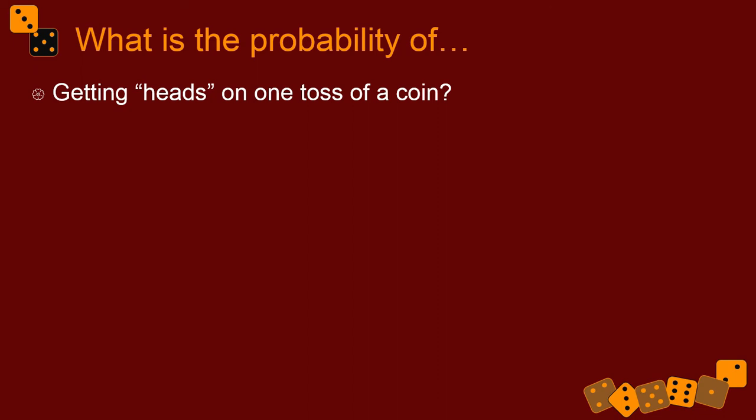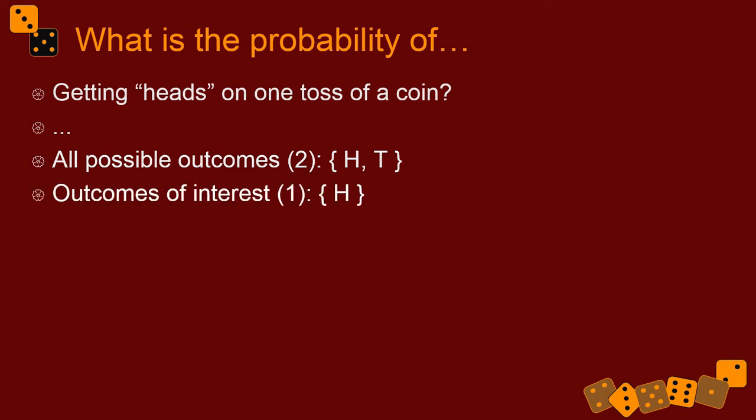So what's the probability of getting heads on one toss of a coin? Now you know this, but let's just show how it works out from a classical probability point of view. All the possible outcomes, the sample space is this. You can get heads or you can get tails. Those are the only two things that can happen that are worth noticing here. There's only two possible ways that can turn out. The outcomes of interest, there's only one of them, heads. Because I formulated the question to include only heads. So the probability is 1 divided by 2, which is 0.5.